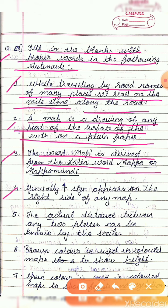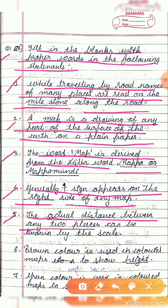Statement 4: Generally, the arrow sign appears on the blank side of any map — the answer is the right side. Statement 5: The blank actual distance between any two places can be known by the scale. The answer is actual distance.